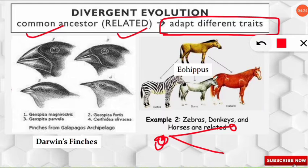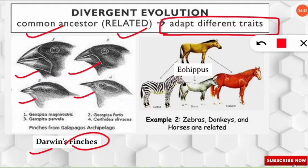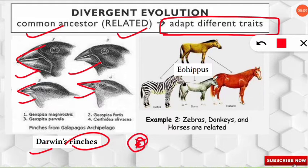The best example of divergent evolution is Darwin's finches in the Galapagos Islands. These birds had a common ancestor, but over time they developed different beak patterns — some broader, some very narrow — based on their food habits. Some fed on seeds, some on fruits, some on insects, but all came from a common ancestor and evolved different beak characteristics. That's why it is an example of divergent evolution.